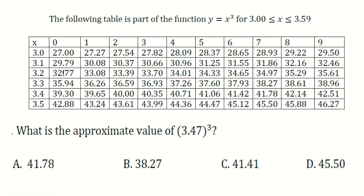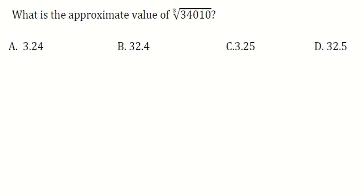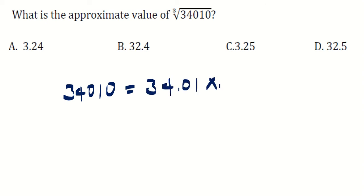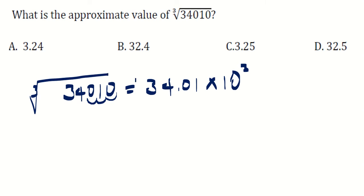We need to write the given number in a form matching the table. 34010 is the same as 34.01 times 10 to the power of 3, because we move the decimal point three units. So the cube root of 34010 equals the cube root of 34.01 times 10 cubed.